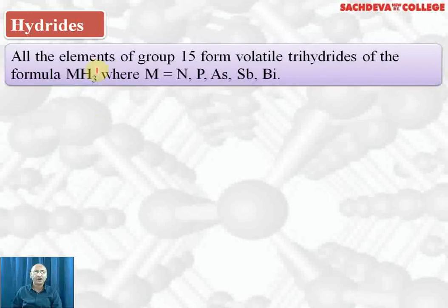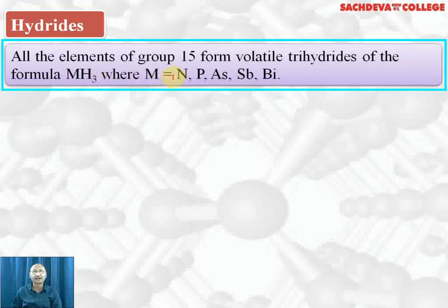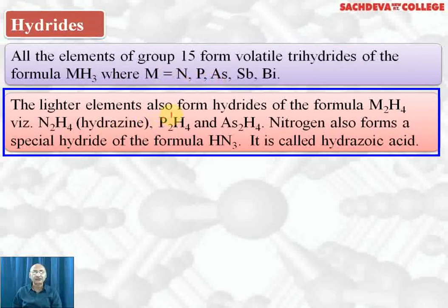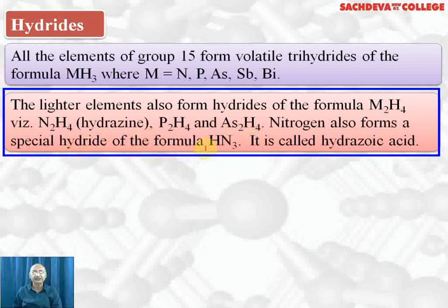All the elements of group 15 form hydrides of the formula MH₃, where M is nitrogen, phosphorus, arsenic, antimony, and bismuth. The lighter elements also form hydrides of the formula M₂H₄; for example N₂H₄, P₂H₄, and As₂H₄ are also formed. Nitrogen also forms a special hydride of the formula HN₃.